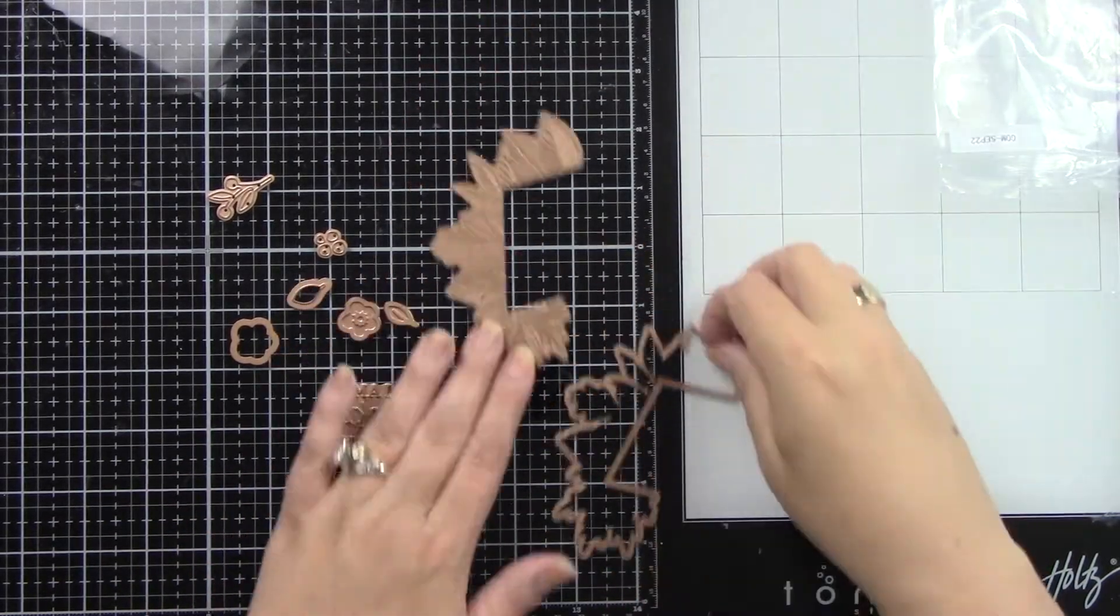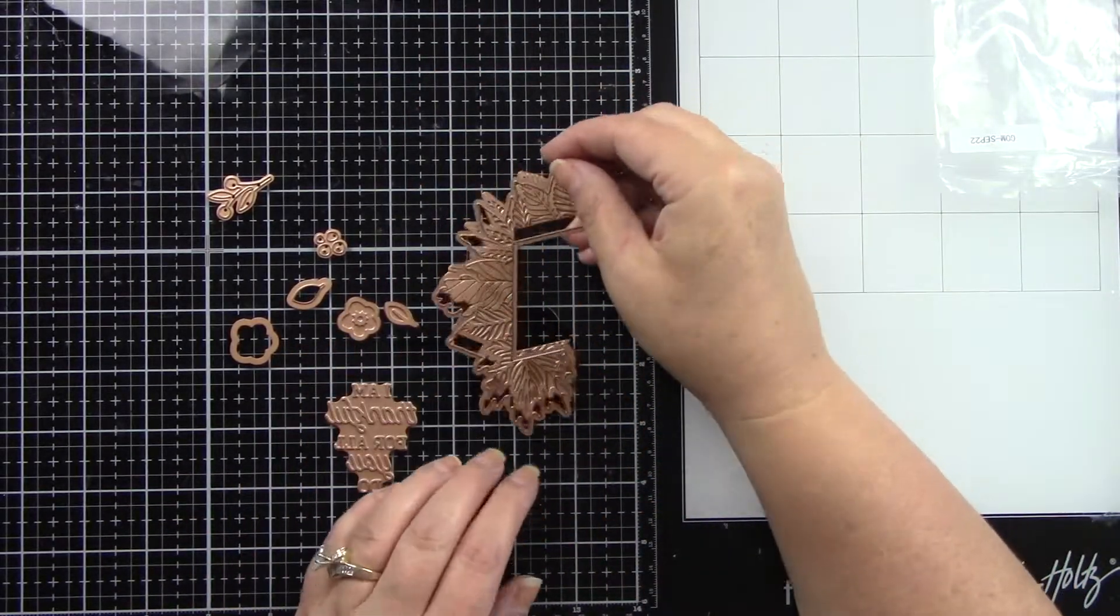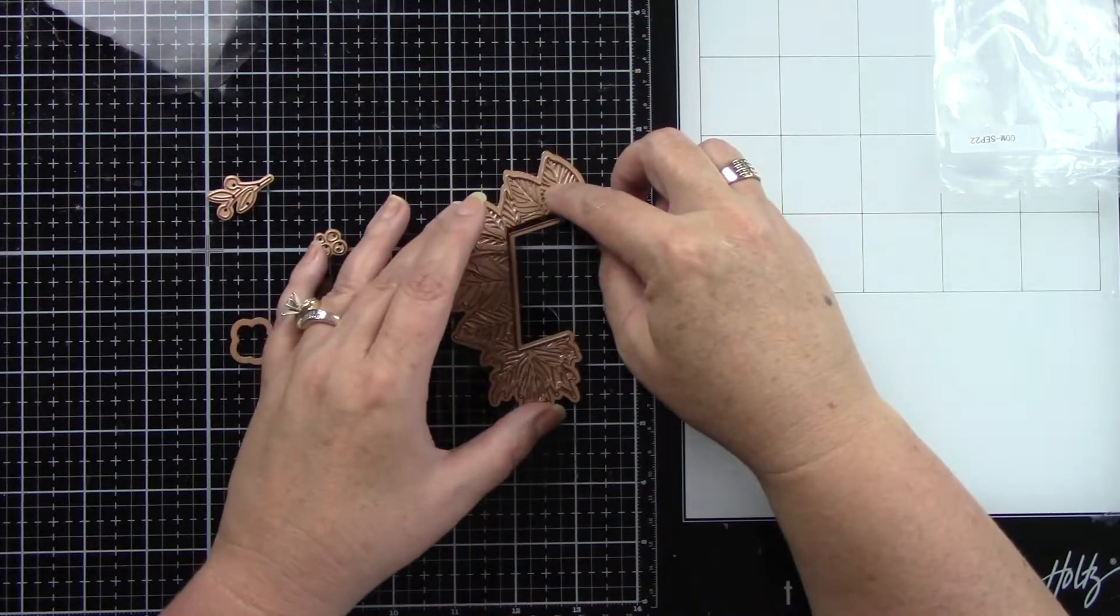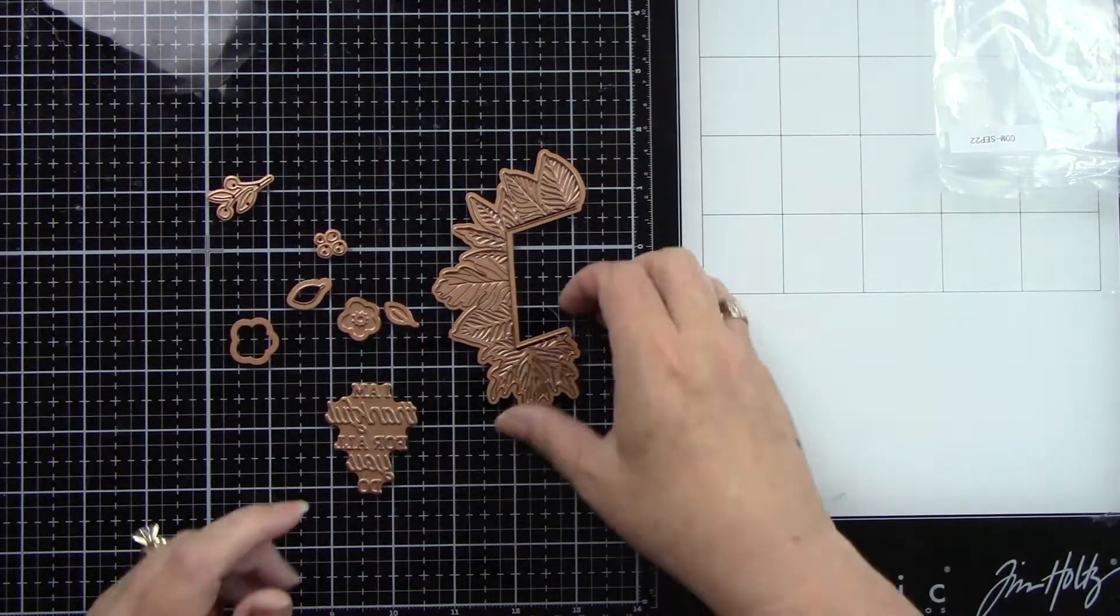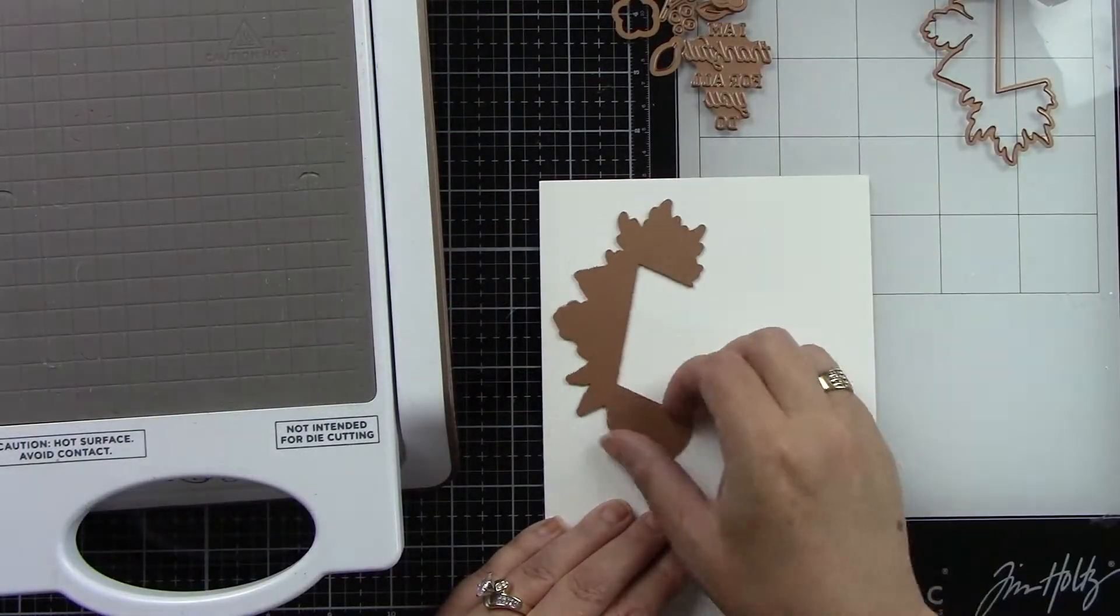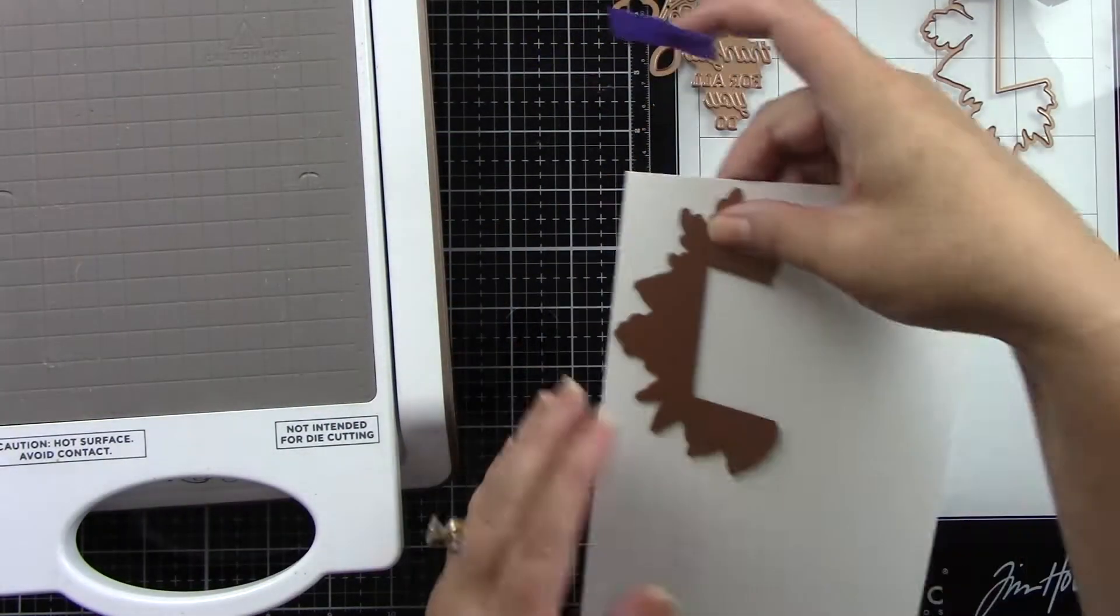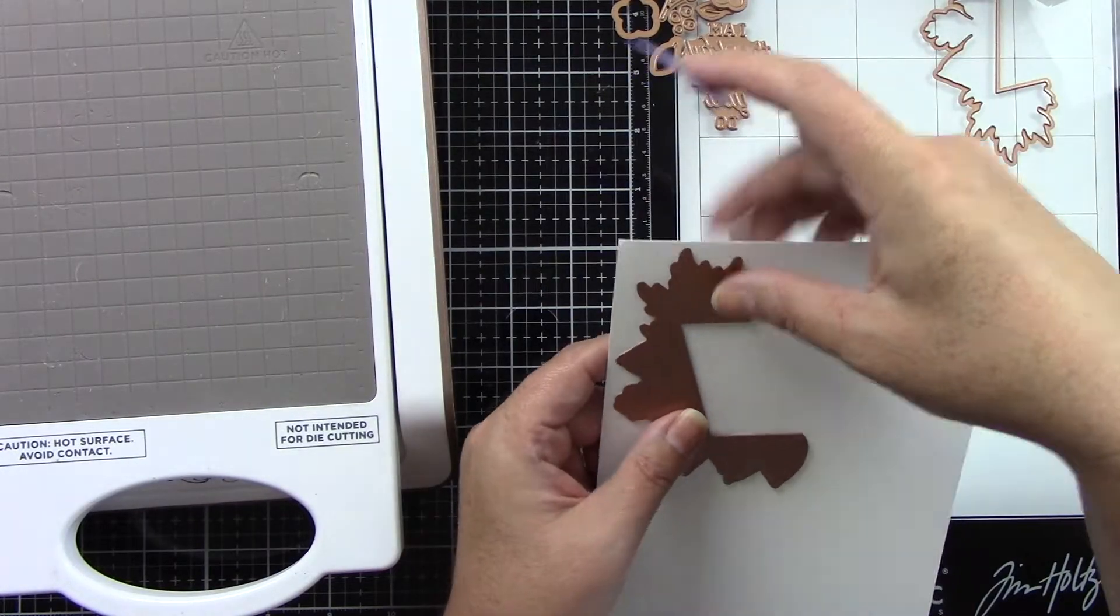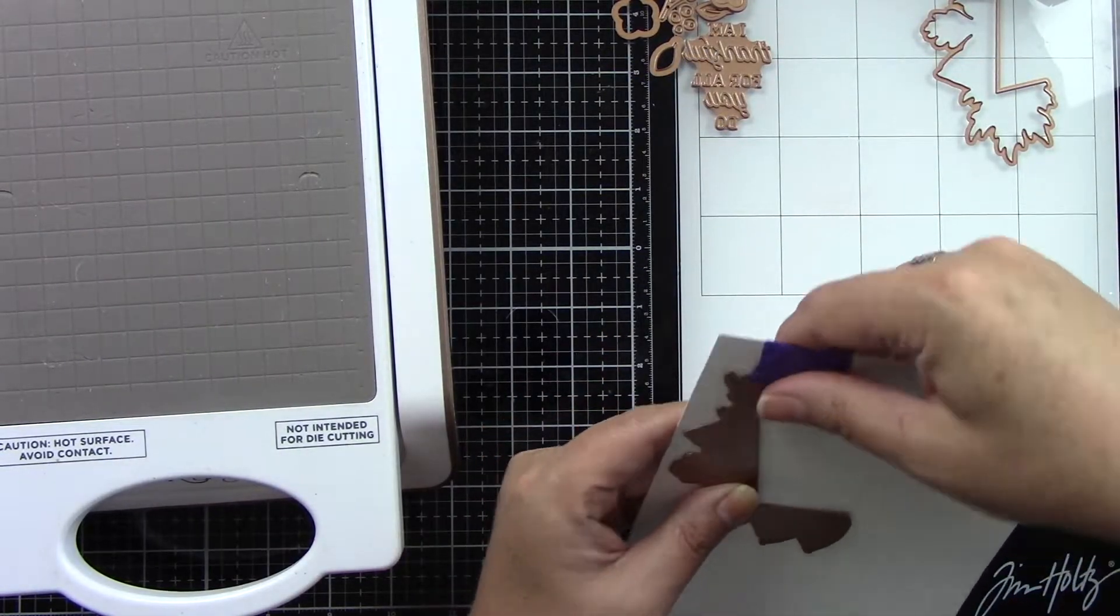So here is this beautiful kit. You have this shape here that you're going to need to do twice because it's going to create a diamond in the center. You have a sentiment, you have a flower and a leaf that you can foil along with a coordinating die, and then another little die cut flower type thing. I did not use that.